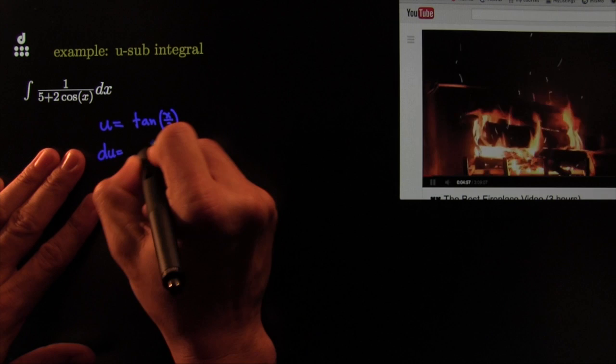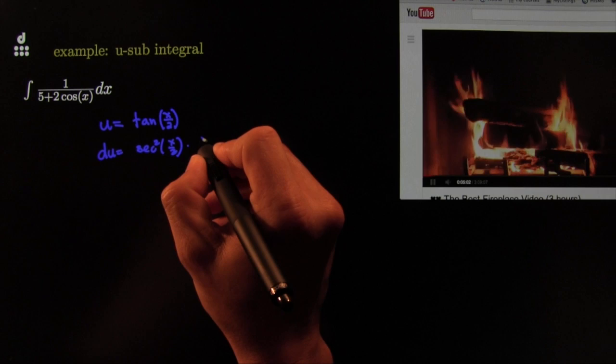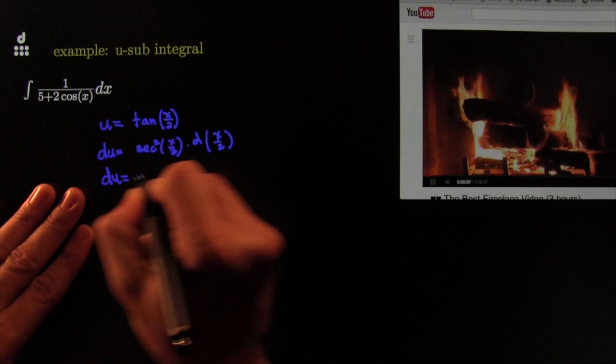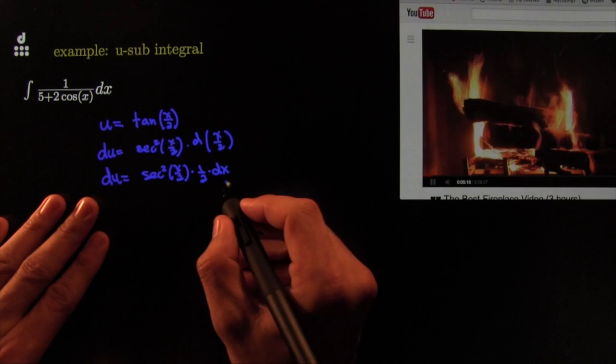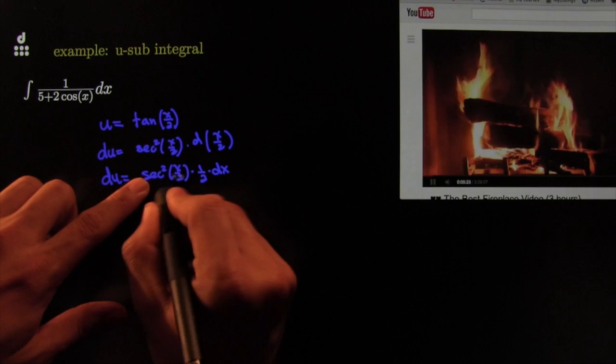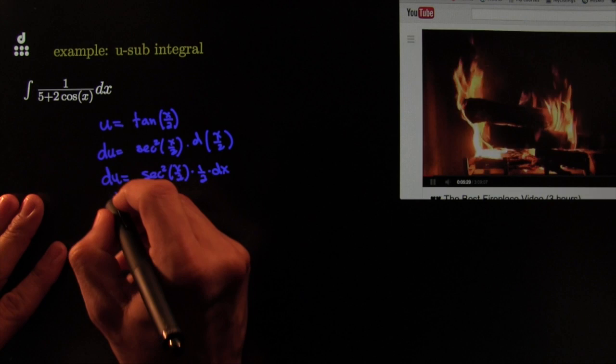Let's complete the dictionary. The differential of u — the derivative of tangent is secant squared of the stuff times the derivative of the inside — so the differential du equals secant squared of x over 2 times one-half times dx. The one-half comes out, and I can multiply both sides by 2 and by cosine to kill the secant.